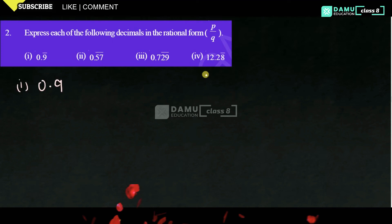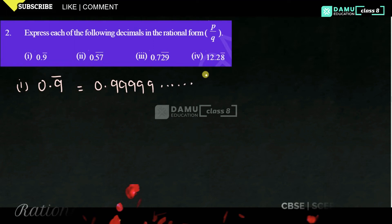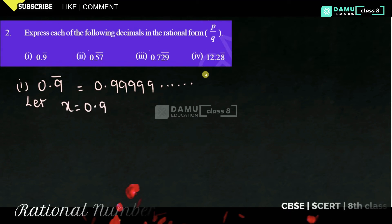0.9 bar. So, 0.9 bar means we are going to repeat 9 continuously. 9 will keep repeating like this. For that, we are going to let x equal to 0.9 bar. Then x will be equal to 0.9999... and so on. The periodicity is 1.